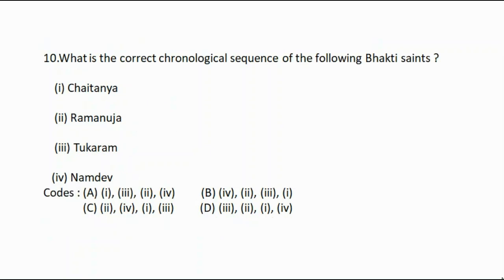Question number ten: What is the correct chronological sequence of the following Bhakti saints? Option one: Chaitanya, option two: Ramanuja, option three: Tukaram, option four: Namdev. The correct answer is option C: two, four, one, three.